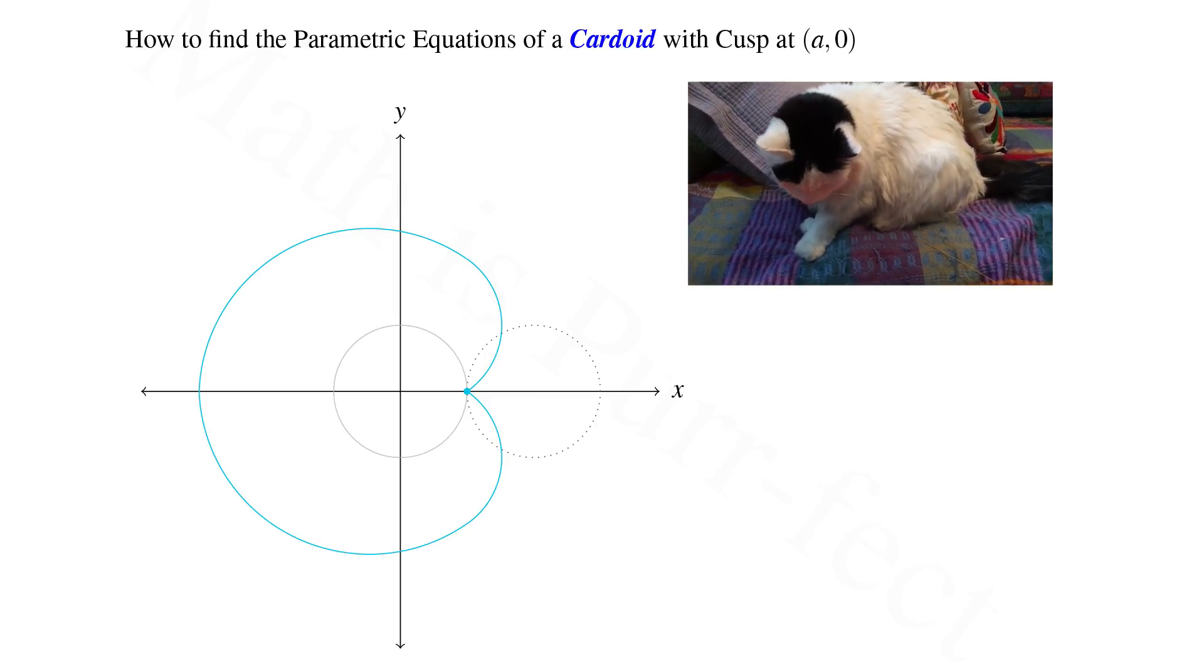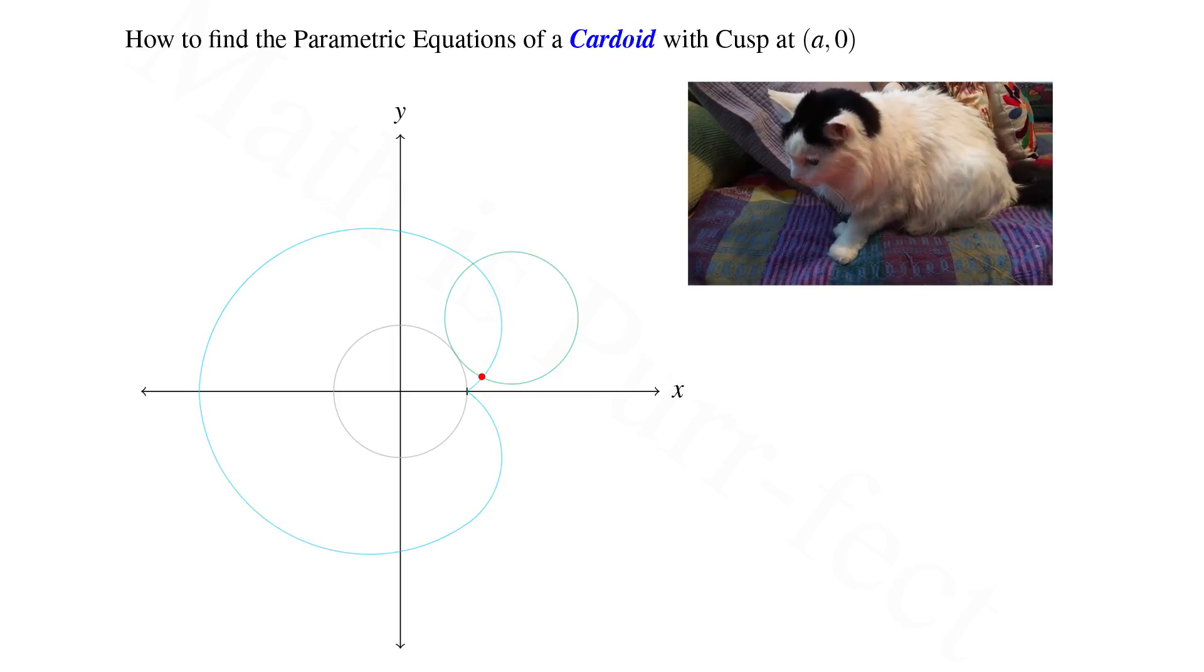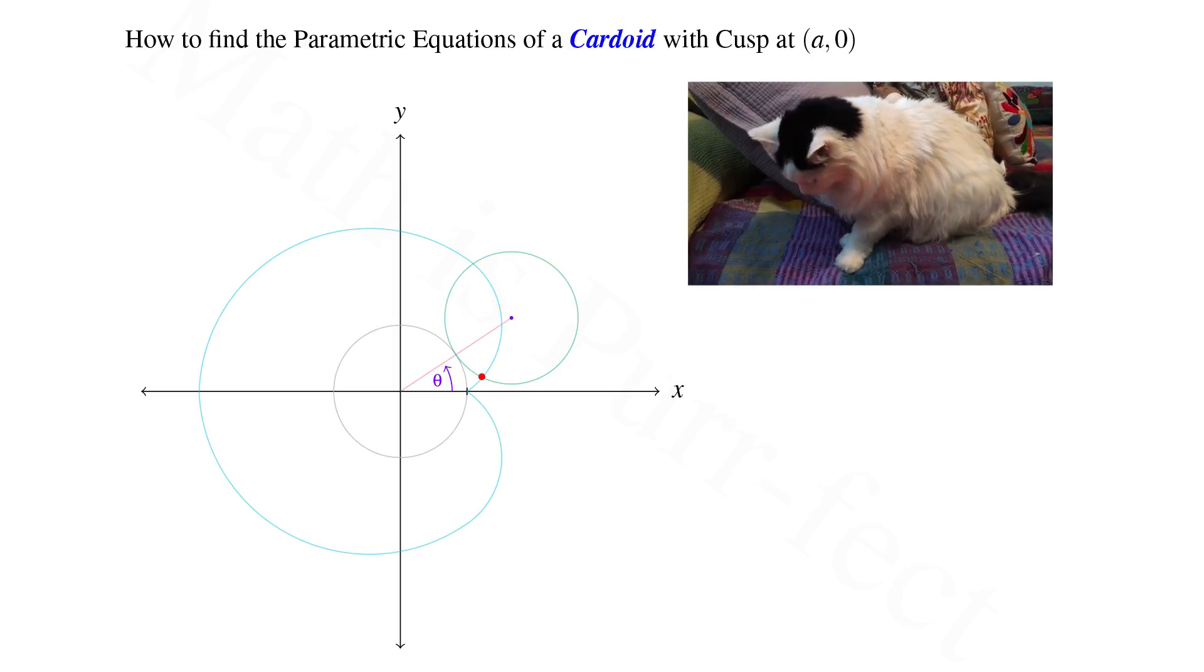In order to find the x and y coordinate of a point on the cardioid, let's consider a point near the beginning of the traversal, indicated in red, at an angle theta with the positive x-axis.